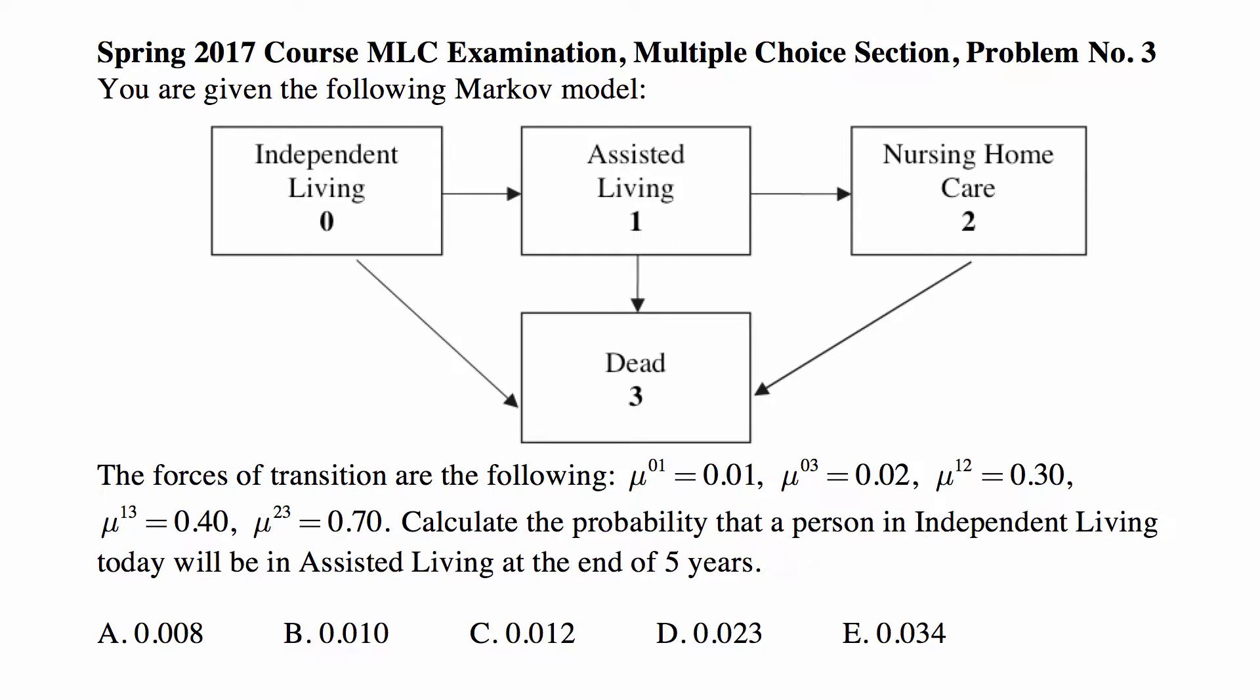Calculate the probability that a person in independent living today will be in assisted living at the end of five years.